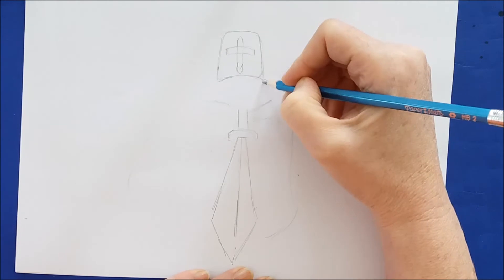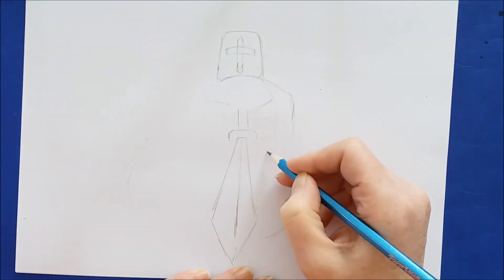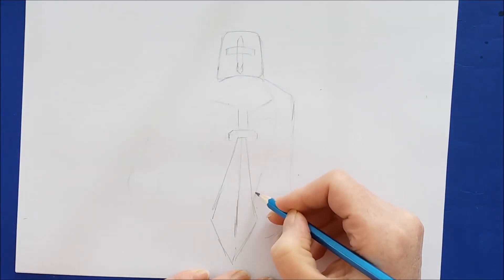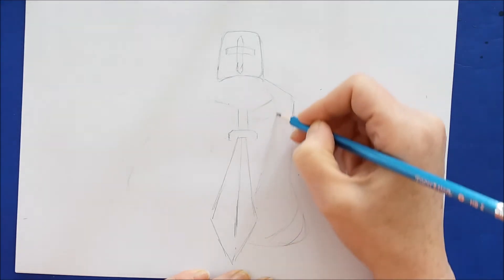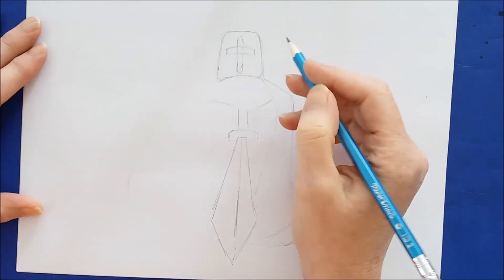I'll just go back up here and take a look at where the cape's going to go. The cape is just a long sweeping line down this side of the knight, and then it will curve out towards the back.